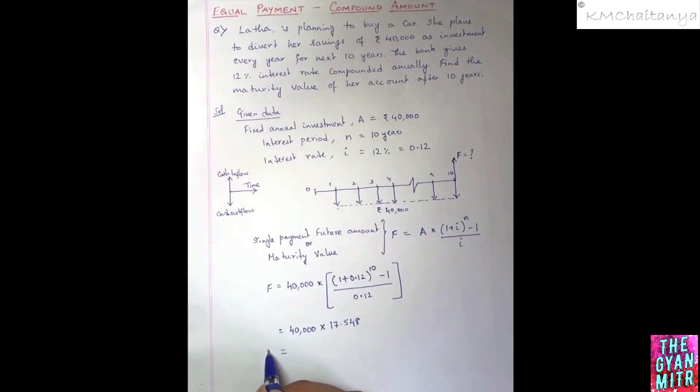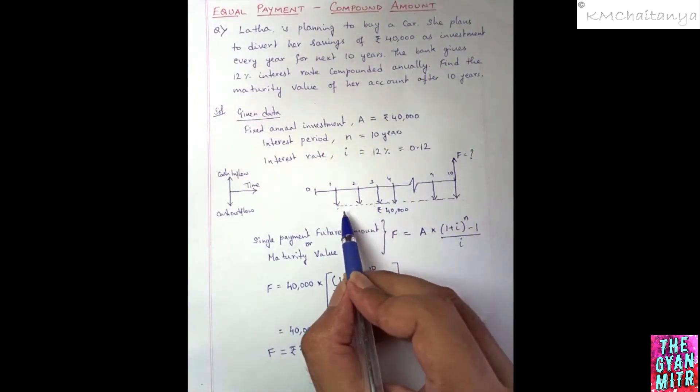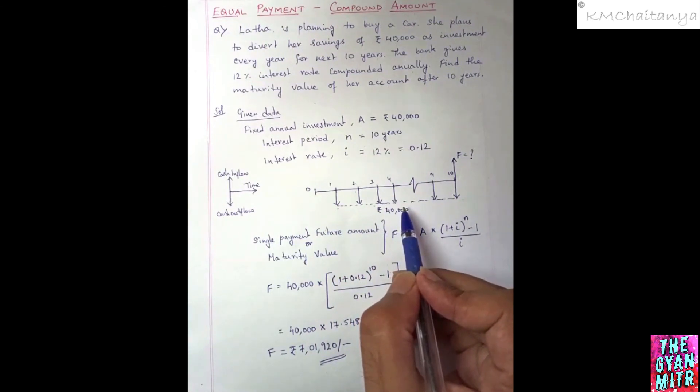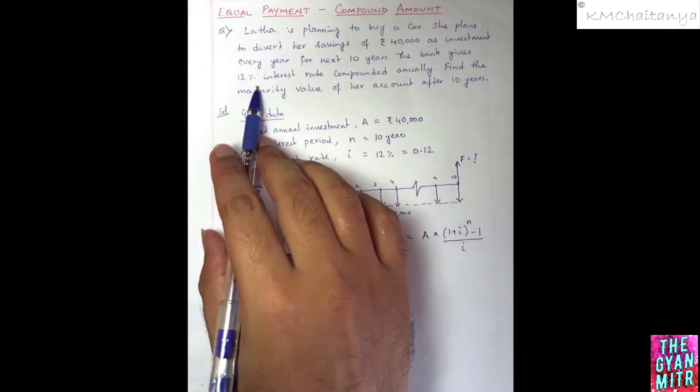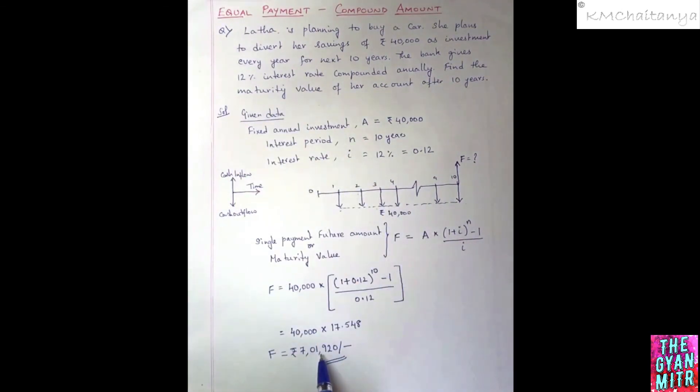The future value F or the maturity value F is equal to 7,01,920 only. So if Latha is planning to invest 40,000 rupees every year into the bank which is giving 12% rate of interest, she'll be having 7 lakh 1 thousand 920 rupees after 10 years in her account.